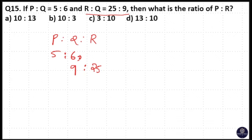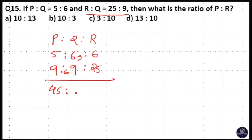What will you do? Extend 6 here, extend 9 here. Then when you multiply: 9 into 5 is 45, 9 into 6 is 54, 25 into 6 is 150, 25 into 4 is 100 — so 25 into 6 is 150. Then we have to find the ratio of P is to R.